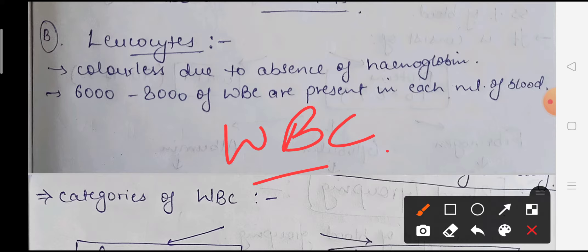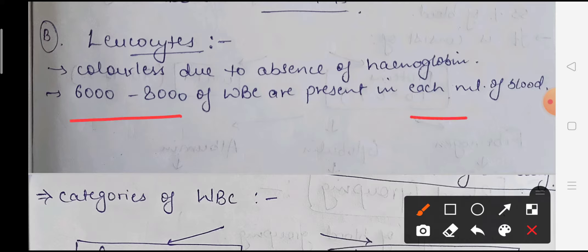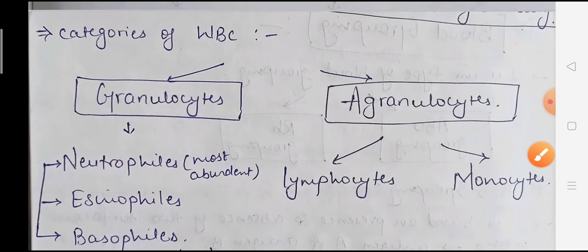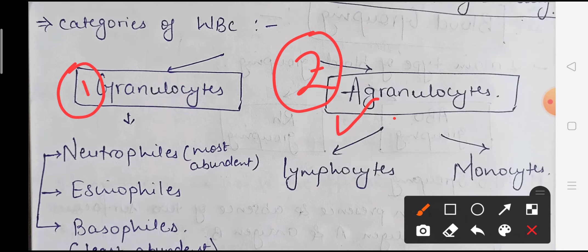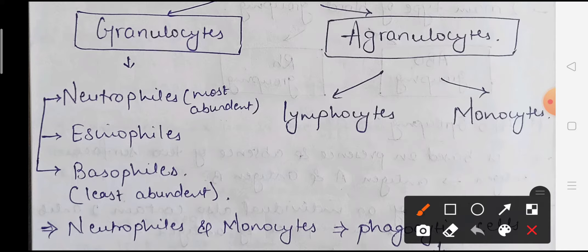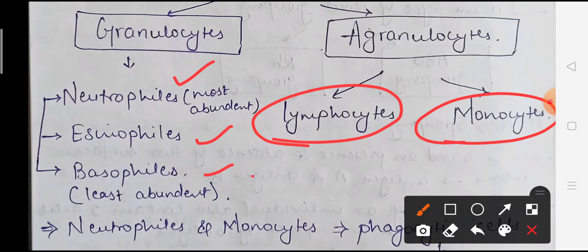WBCs are found in much smaller amounts compared to RBCs - approximately 6,000 to 8,000 per ml of blood. WBCs are divided into two categories: granulocytes and agranulocytes. Granulocytes include neutrophils, eosinophils, and basophils. Agranulocytes include lymphocytes and monocytes. Neutrophils are the most abundant, making up about 60 to 65 percent of total WBCs. Basophils are the least abundant, normally only 0.5 to 1 percent.